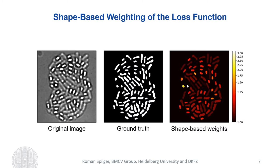Here you can see an example of the computed shape-based weights. On the left is the original image, in the middle the ground truth, and on the right the shape-based weights. It can be seen that strongly ellipsoidal shapes such as bacteria yield low weights, while more circular shapes such as endospores — which are less present in the training data and much more difficult to segment — result in higher weights. This weight map enables the network to focus on endospores during training to improve the segmentation of these structures.